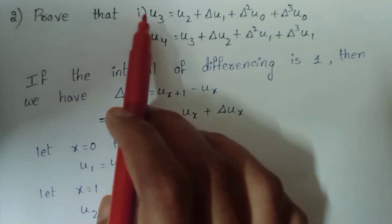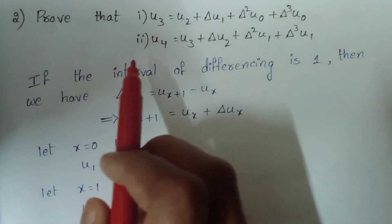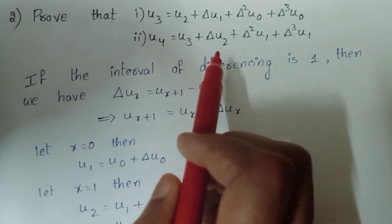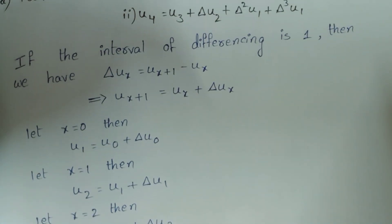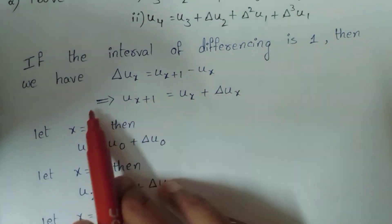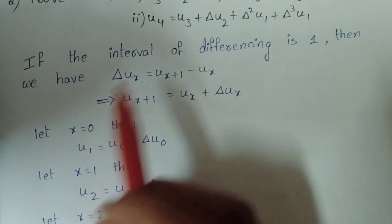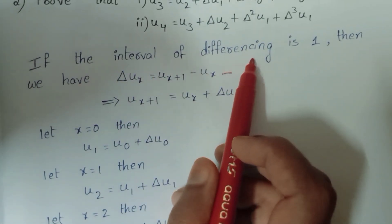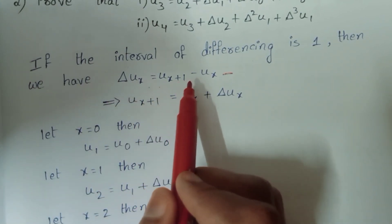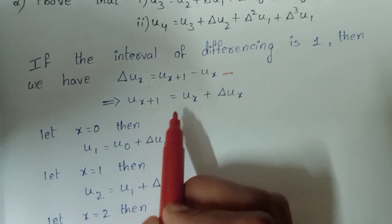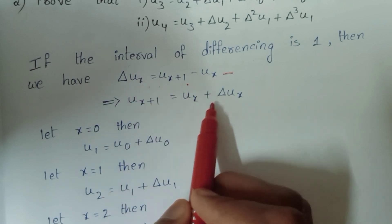Next problem: prove that (1) u3 equal to u2 plus delta u1 plus delta square u0 plus delta cube u0, and (2) u4 equal to u3 plus delta u2 plus delta square u1 plus delta cube u1. If the interval of differencing is 1, then delta ux equal to u(x plus 1) minus ux. So u(x plus 1) equal to ux plus delta ux.